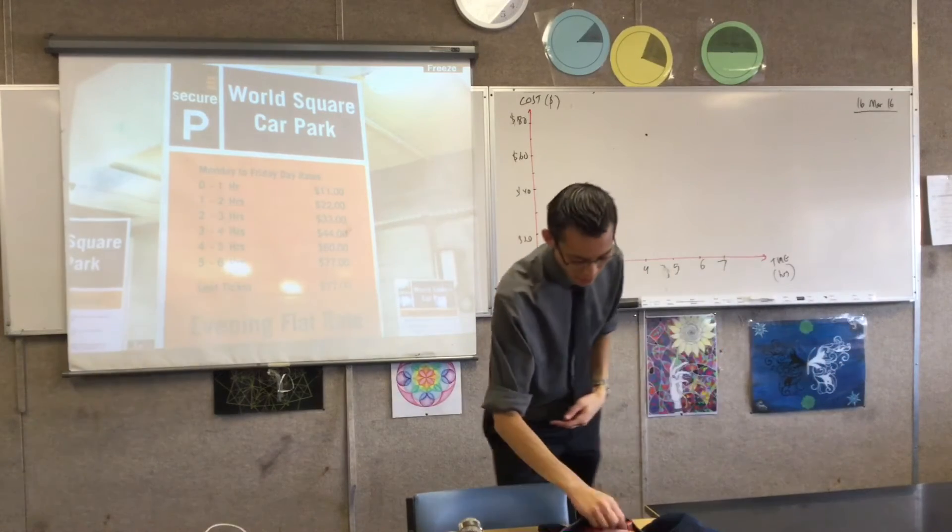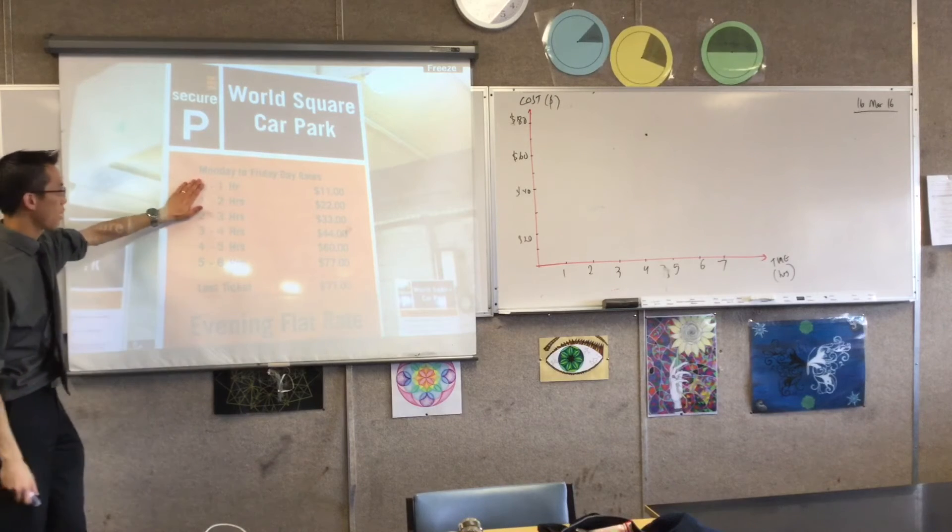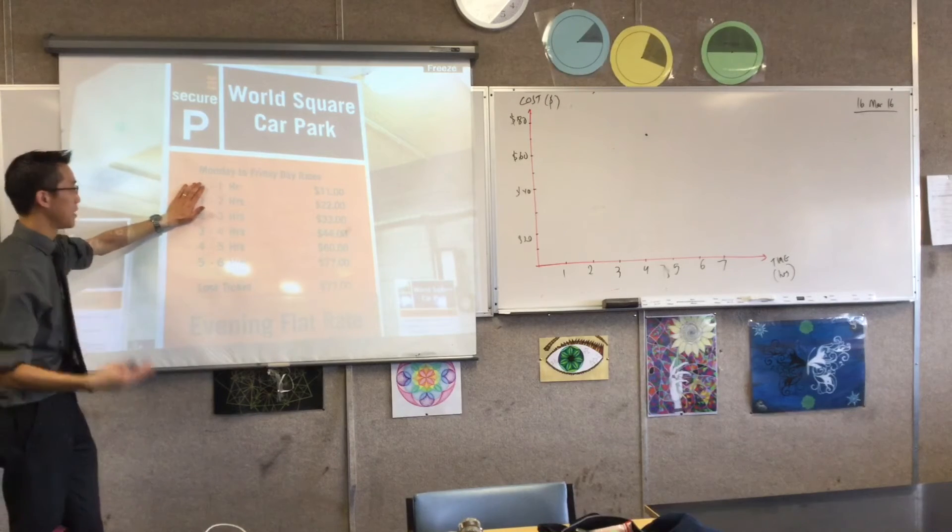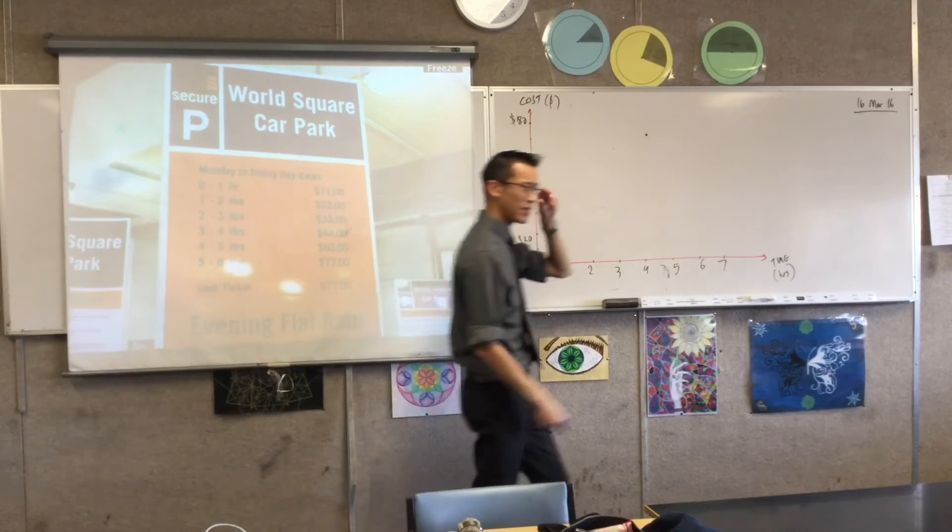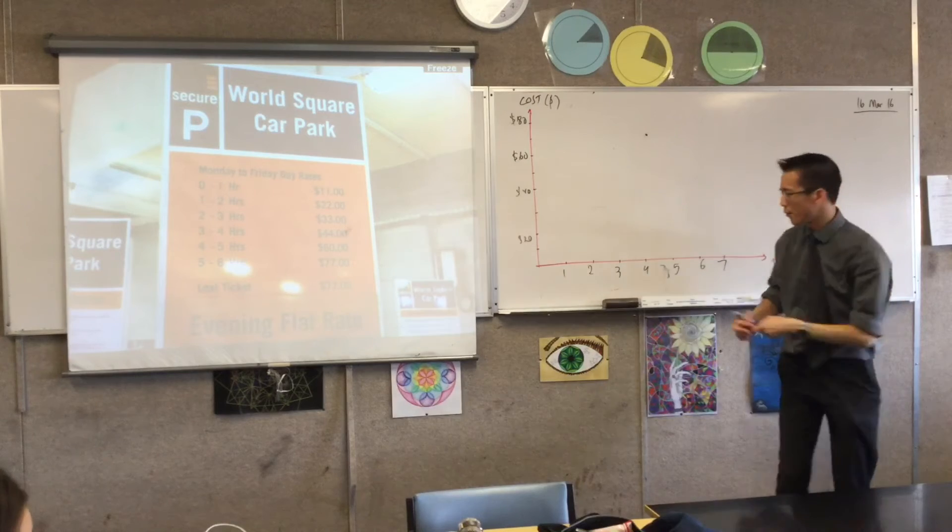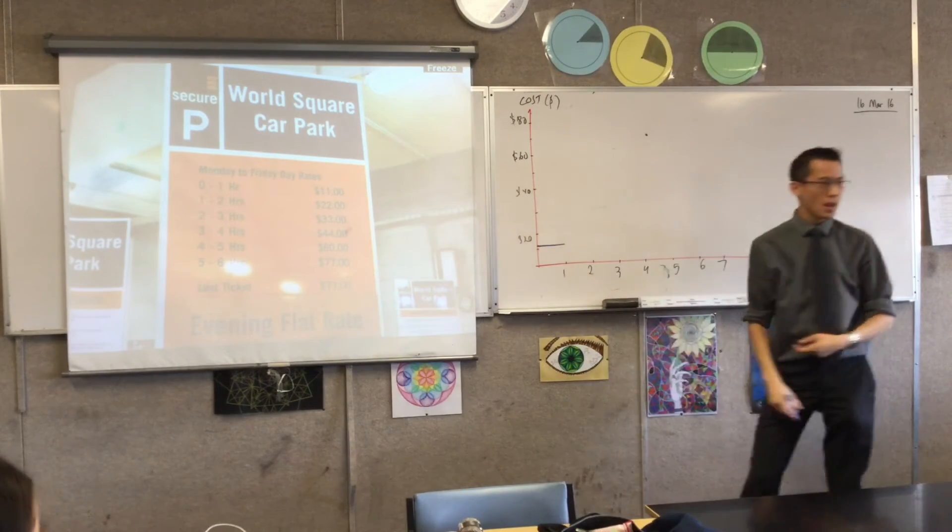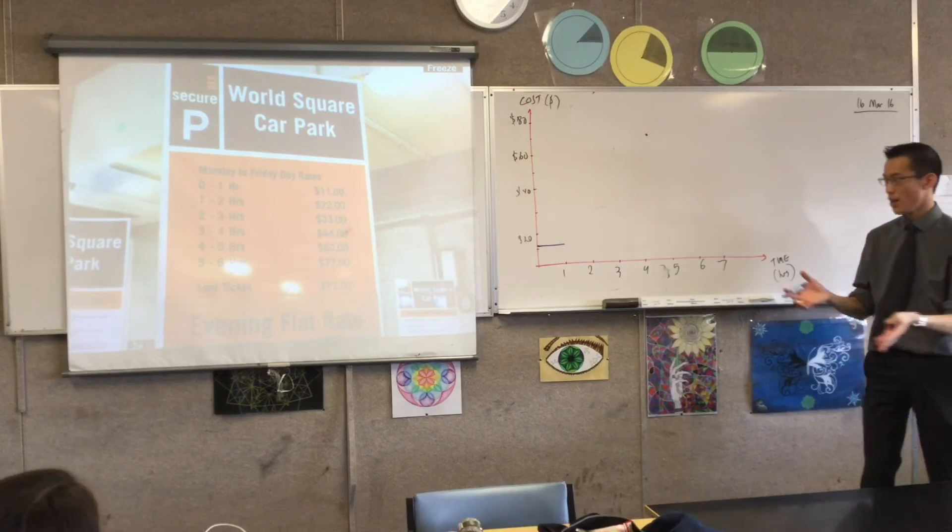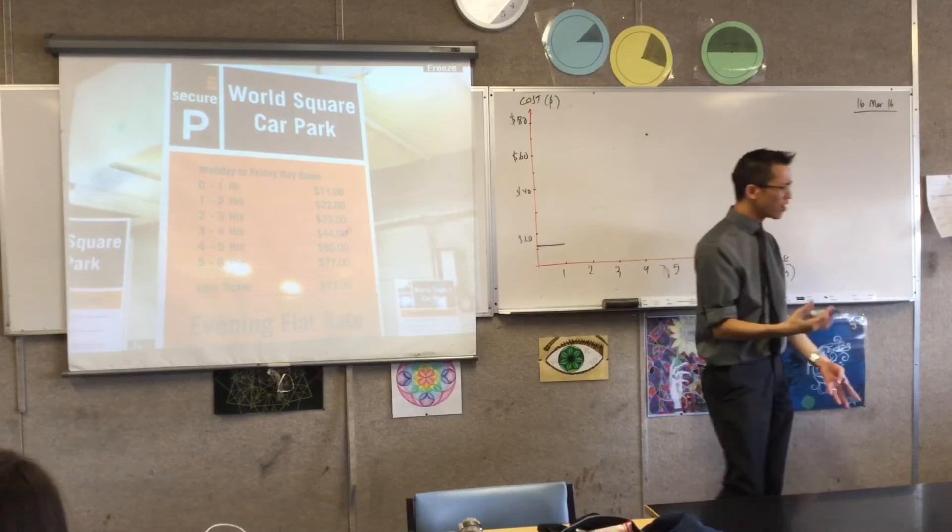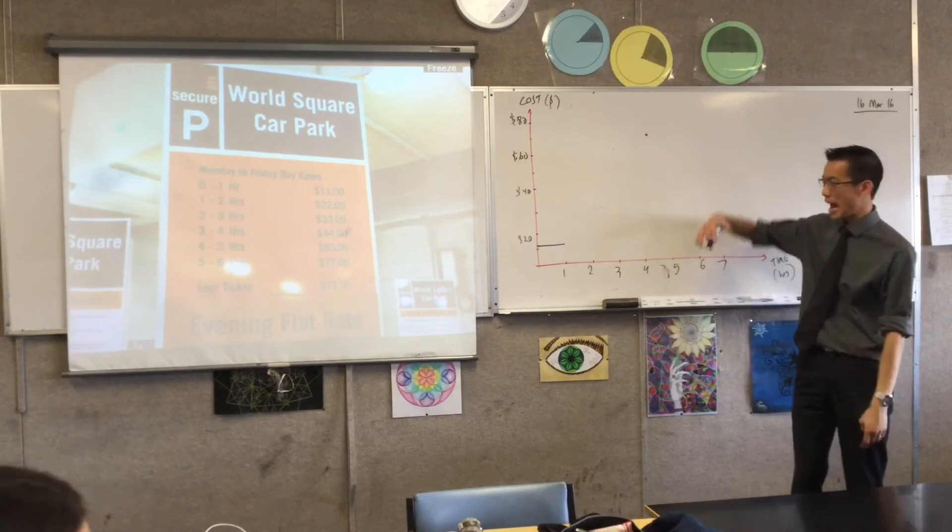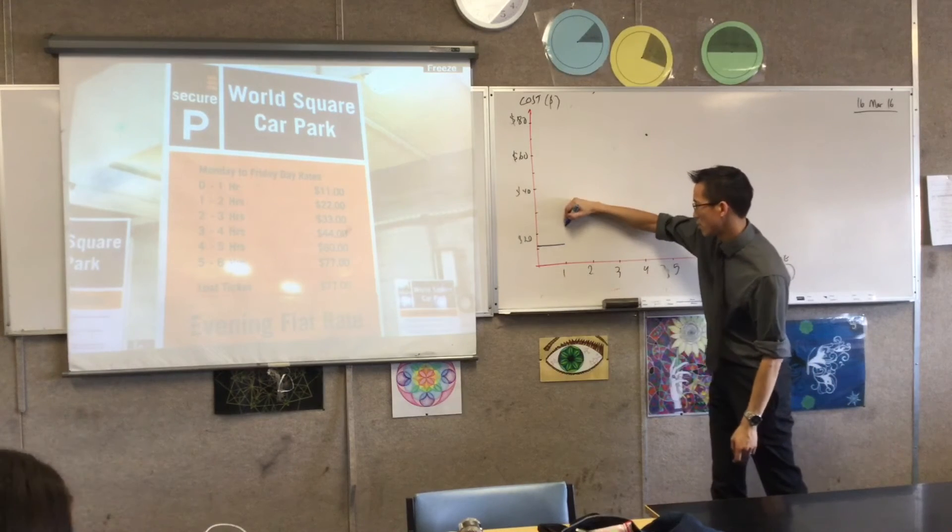Now we can do our steps. The second you enter, it doesn't matter if you stay one minute, five minutes, or 59 minutes - you're paying $11. So on your axis, you want to be right above 10. I haven't put any start or end on this interval yet. For one to two hours, I've got $22, which is something like this.